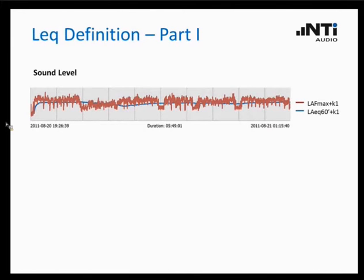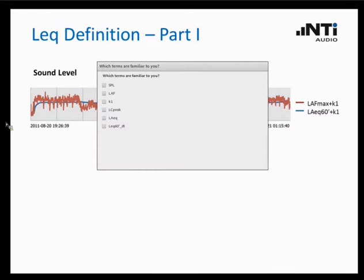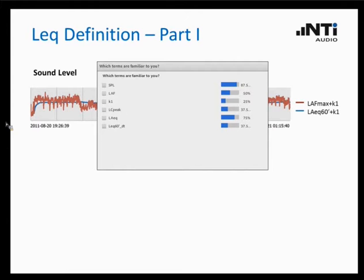Let's look at this time plot of two different measures: the LAF maximum plus K1 and the LAQ 60 plus K1 — I am going to explain what those mean. I would like to add a short poll to get a better understanding of your knowledge, so please tick the boxes of the terms you are familiar with — you can select several. It seems almost everybody has taken their choice. The result shows a pretty good level of familiarity, and I will now explain all these terms in more detail.